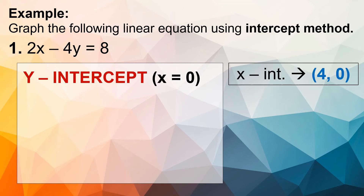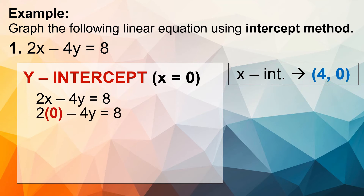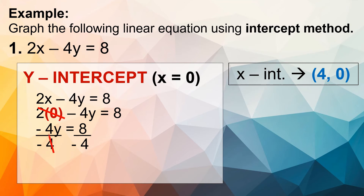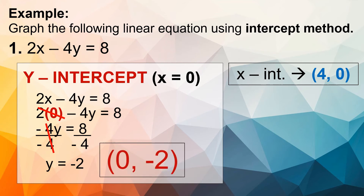Let's proceed to the y-intercept, wherein x is equal to 0. Using the same equation, substitute 0 for x: 2 times 0 minus 4y equals 8. Since 2 times 0 gives us 0, we cancel it out and have negative 4y equals 8. Dividing both sides by negative 4, we get y equals negative 2. So our coordinates will be 0 and negative 2 — 0 from the value of x and negative 2 from the value of y.